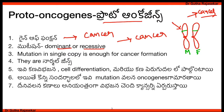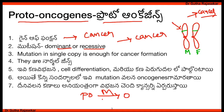There is a lot of cancer in the world. Proto-oncogenes are involved in cell growth, cell differentiation, and cell division.